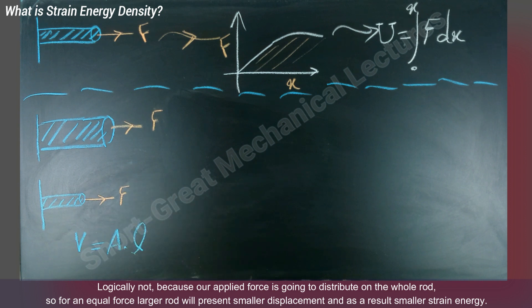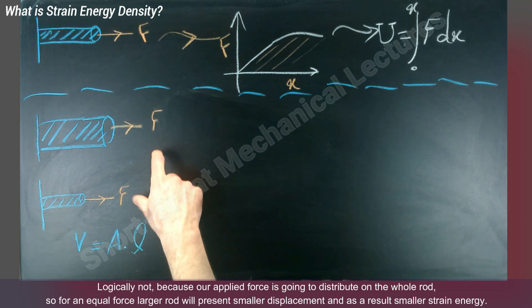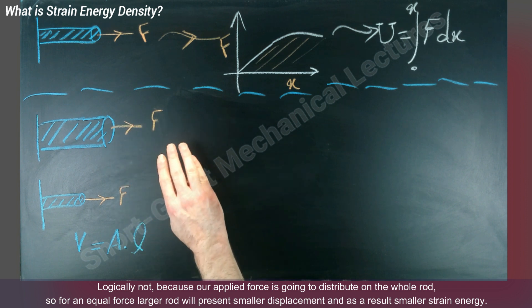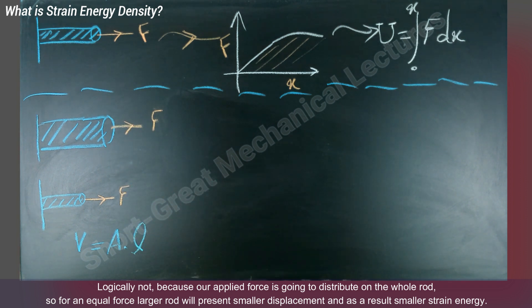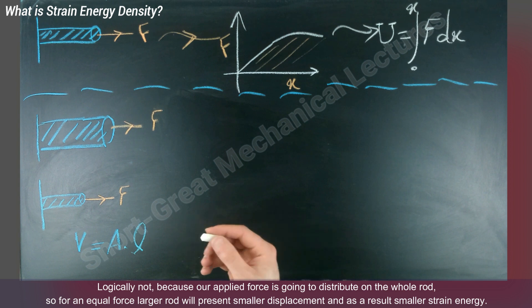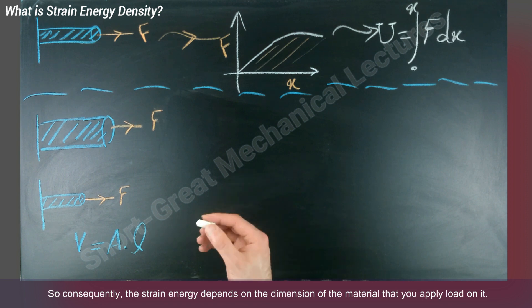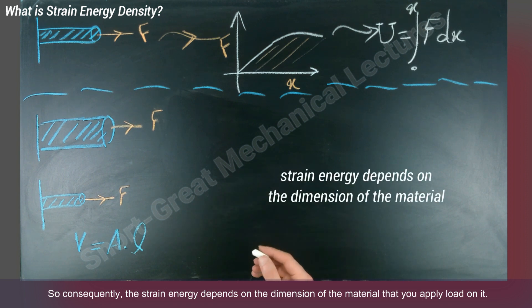Because our applied force is going to distribute on the whole rod. So for an equal force, a larger rod will present smaller displacement and as a result, smaller strain energy. So consequently, the strain energy depends on the dimension of the material that you apply load on.